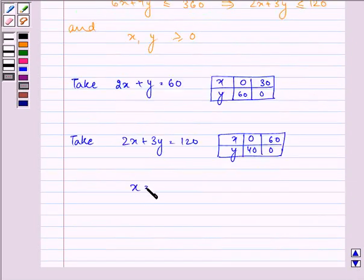And X is equal to 20, X is greater than 0, and Y is also greater than or equal to 0. So let us plot these three lines on the graph.